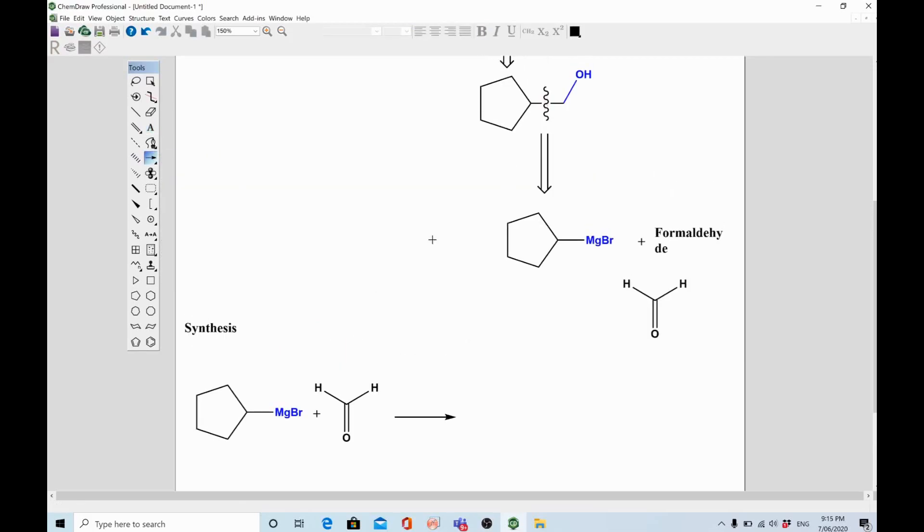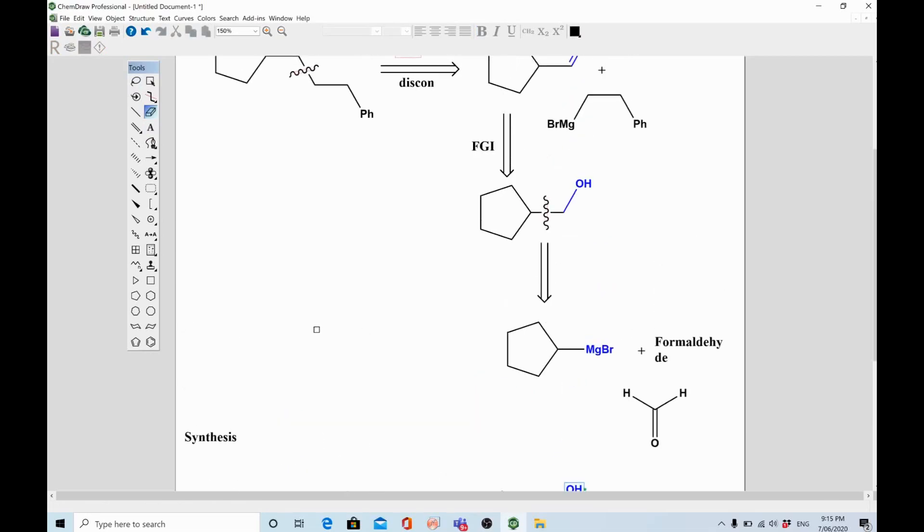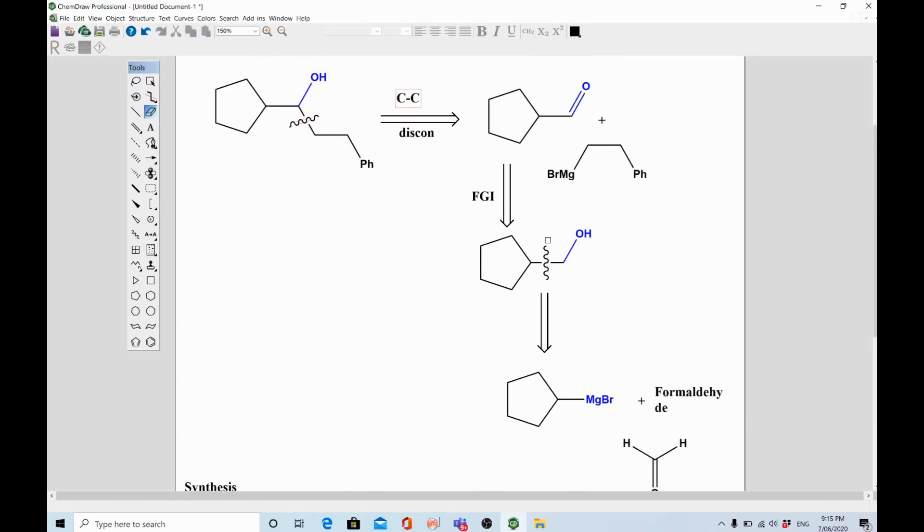So that product will be this one. Remember, so we are going forward direction now. Retrosynthetic was the backward direction. That is the difference between simple synthesis and retrosynthesis. The retro word also itself indicates you are going in a backward direction to design a synthetic route for a particular set of compounds or molecule. Right, next step was to convert alcohol into aldehyde.